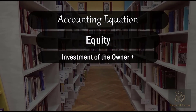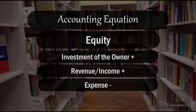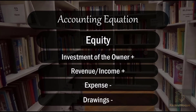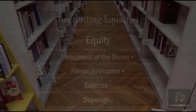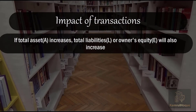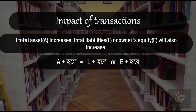Equity: when the owner invests, equity increases. Revenue and income cause equity to increase (plus). Expenses cause equity to decrease (minus). Drawings by the owner also cause equity to decrease (minus). Impact of transactions: if total assets increase, total liabilities or owner's equity will also increase, so that either L or E will go up on the right side of the equation.